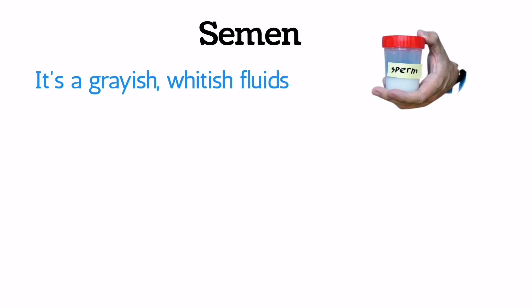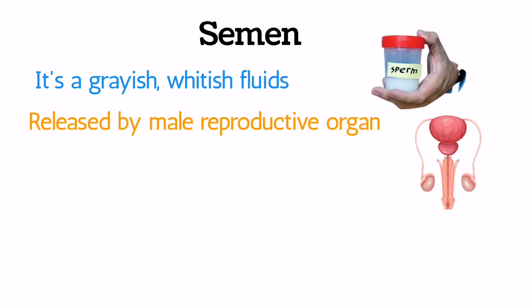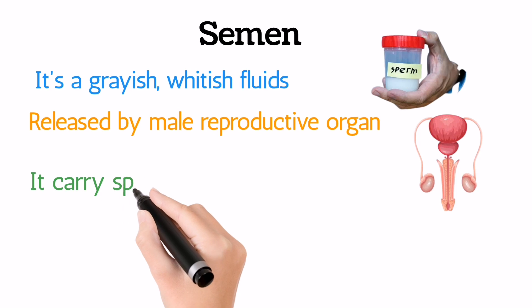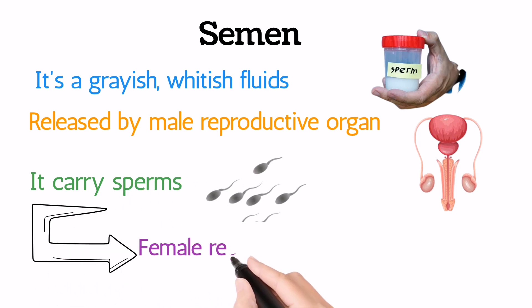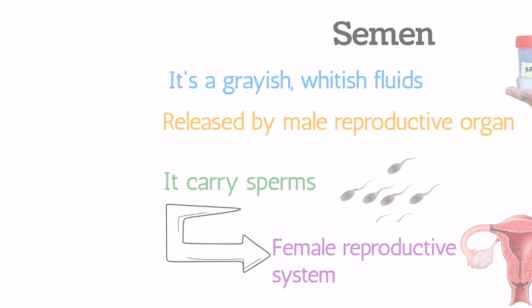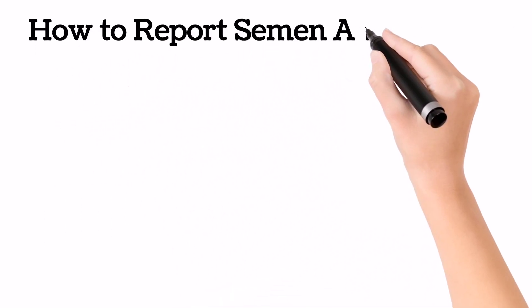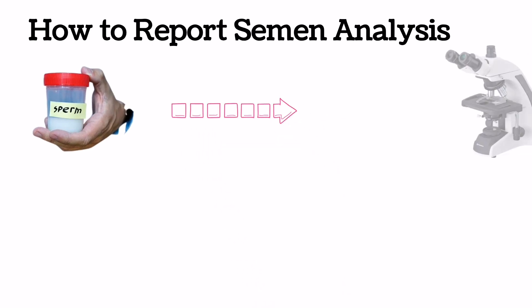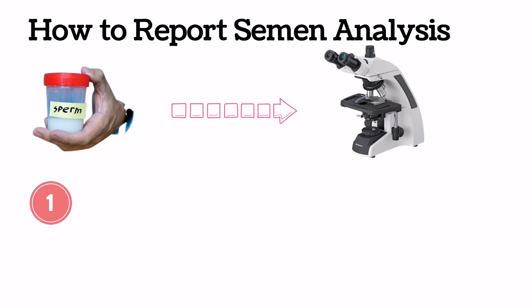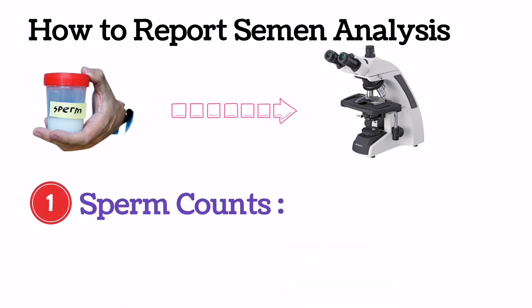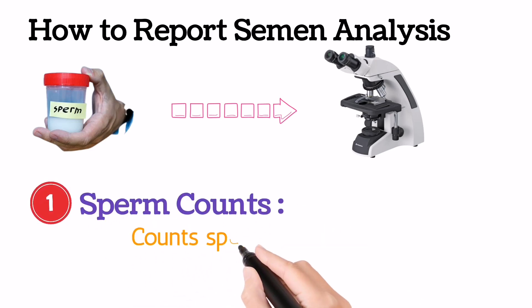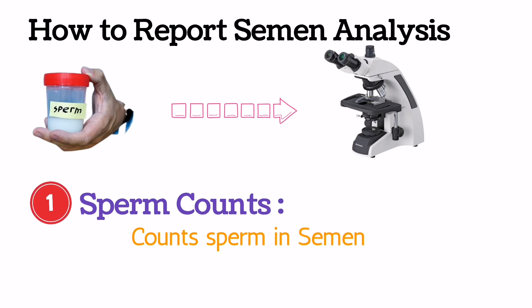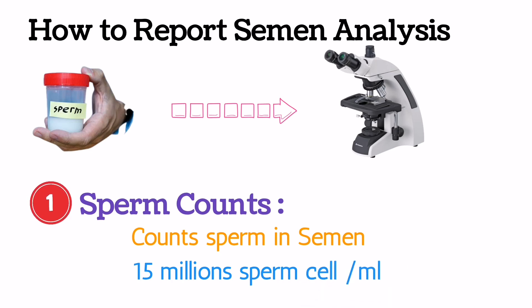Semen is a grayish whitish fluid ejaculated by the male reproductive organ which contains sperms. The main function of semen is to carry these sperms to the female reproductive organ for fertilization. Now, how to report semen analysis? Once a lab gets a semen sample, it will check it under the microscope. First, sperm count — you should count all the sperm present in semen. The normal sperm count required for fertilization is at least 15 million sperm cells per milliliter.